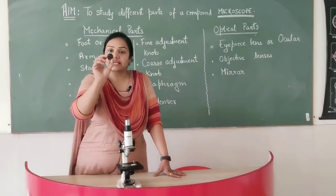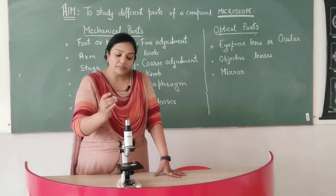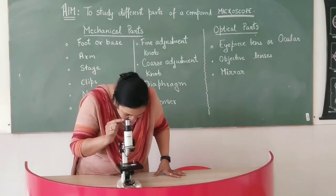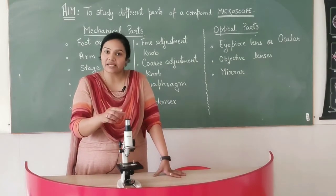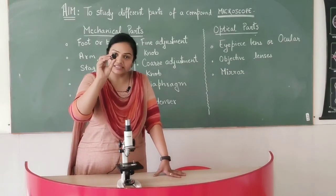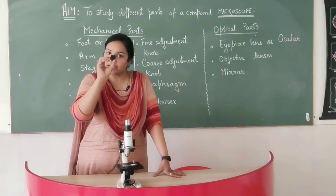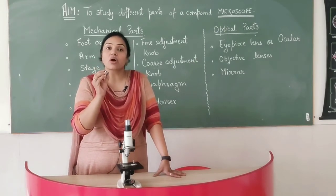Why do we say it eye piece? Because when you see through this, the eye is directly coming in contact with the first lens. That is why it is called eye piece. It is also called ocular.